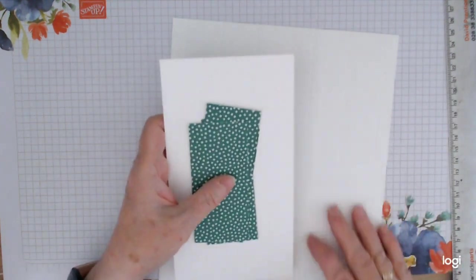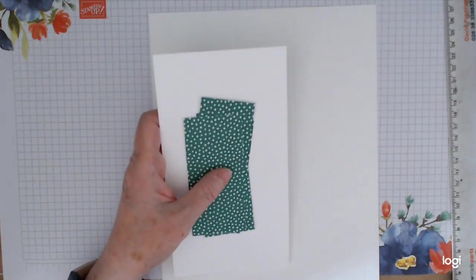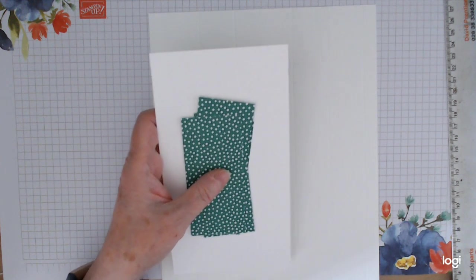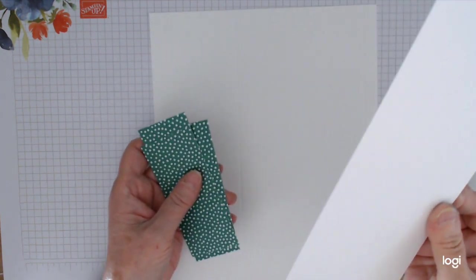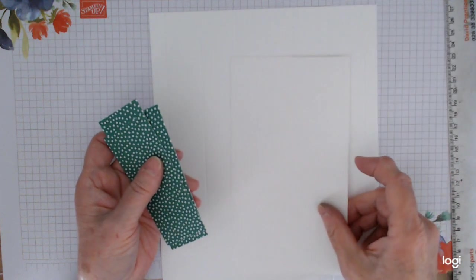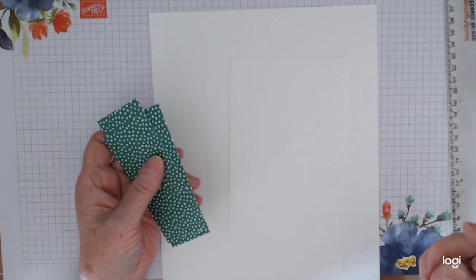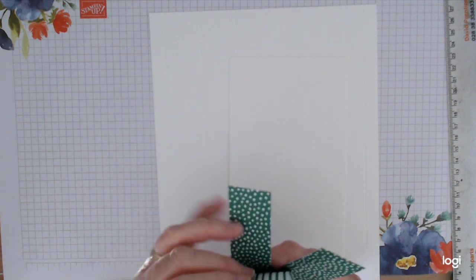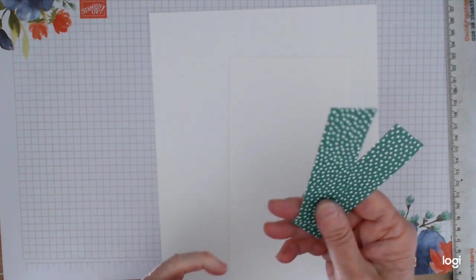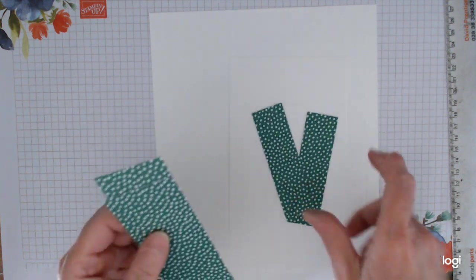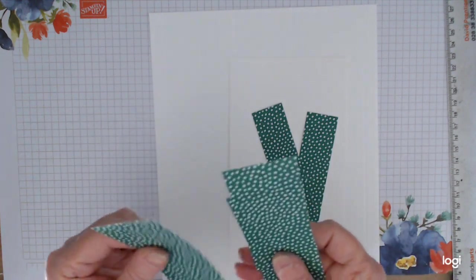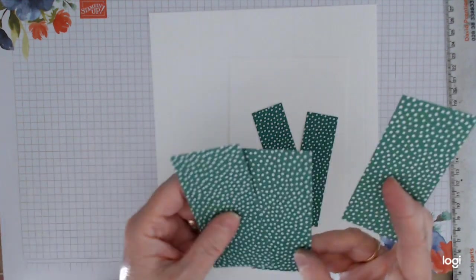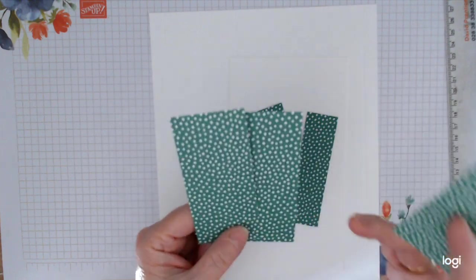So let's go and do what we need to do. You're going to need a piece of Whisper White for your main base measuring 8 inches by 10 inches. You're going to need a piece of Whisper White for your lid measuring 7 and 3/8 by 4 and 1/8.